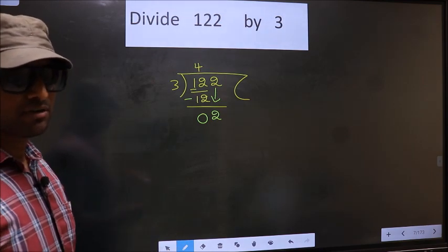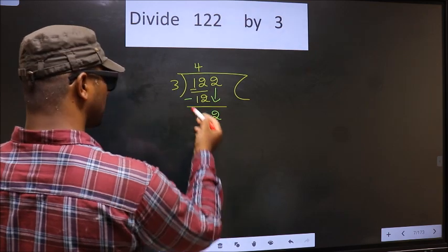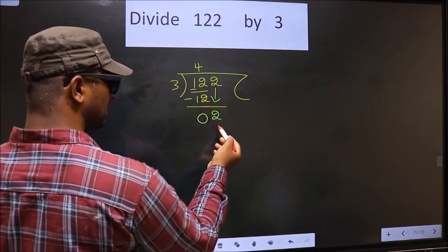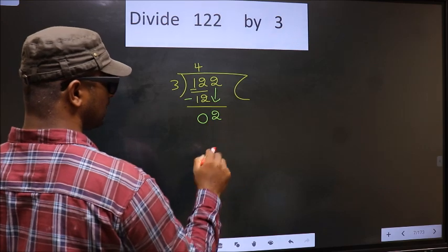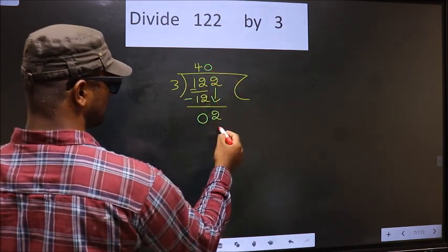Instead what you should think of is, what number should we write here? If we write 3 that will be larger than 2. So what we do is, we take 0 here. So 3 into 0, 0.